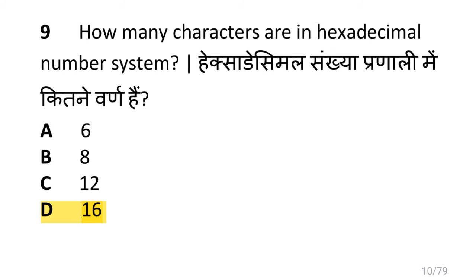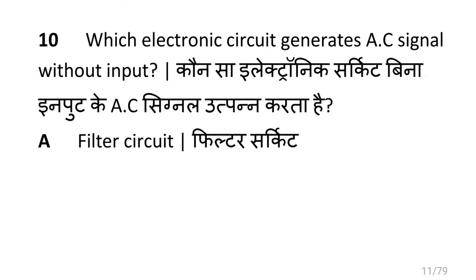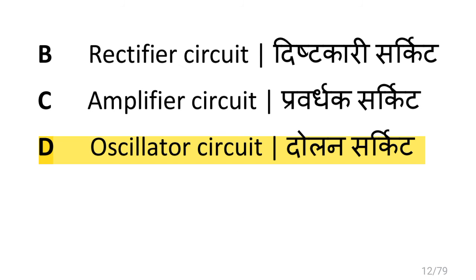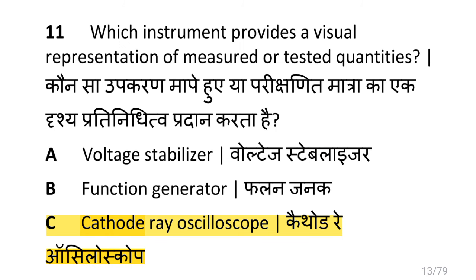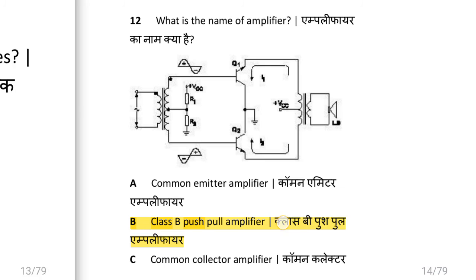How many characters are in the hexadecimal number system? i.e. 16. Which electronic circuit generates AC without input? i.e. oscillator circuit. Which instrument provides a visual representation of measured or tested quantities? i.e. CRO — cathode ray oscilloscope.